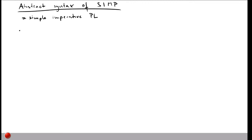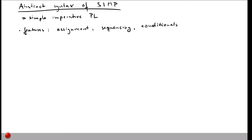SIMP nevertheless has a couple of features you'll know from normal programming languages. In particular, it has assignments so you can assign values to variables. It supports sequencing, meaning you can have one statement followed by another. It also has conditionals for branches, and loops so you can execute things many times. In terms of types, the only variables we have are integer variables — everything is about integers and performing operations on them.